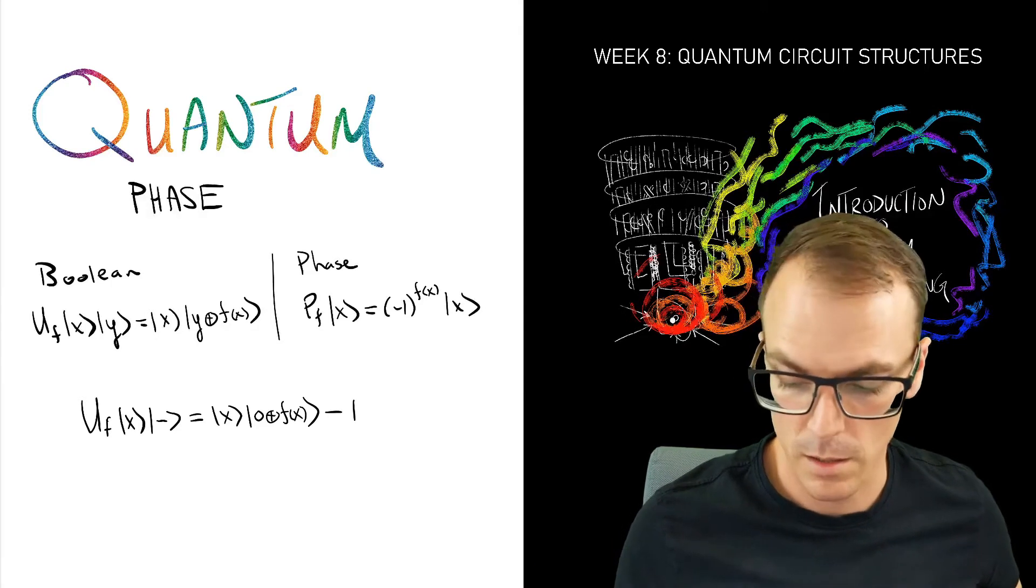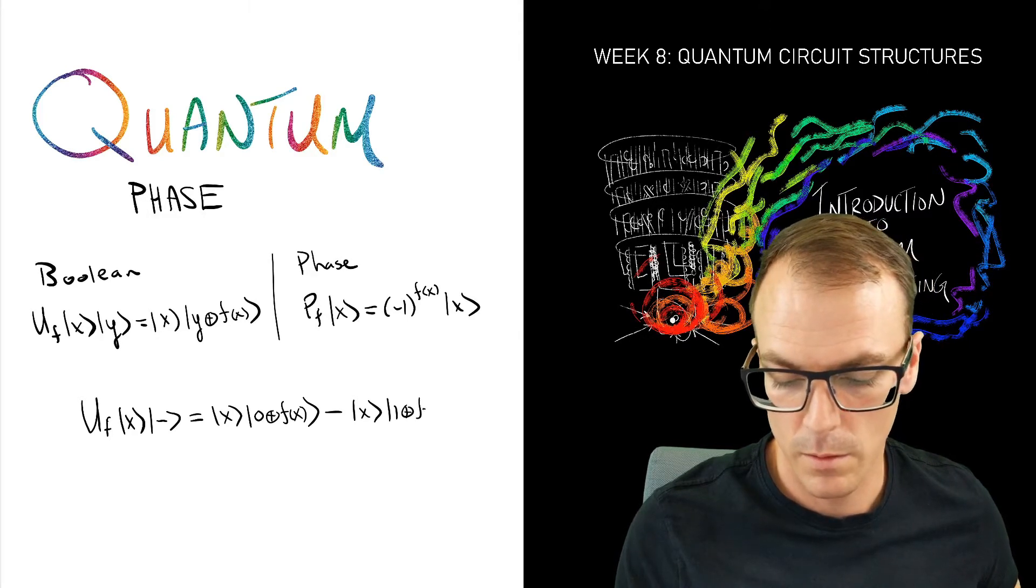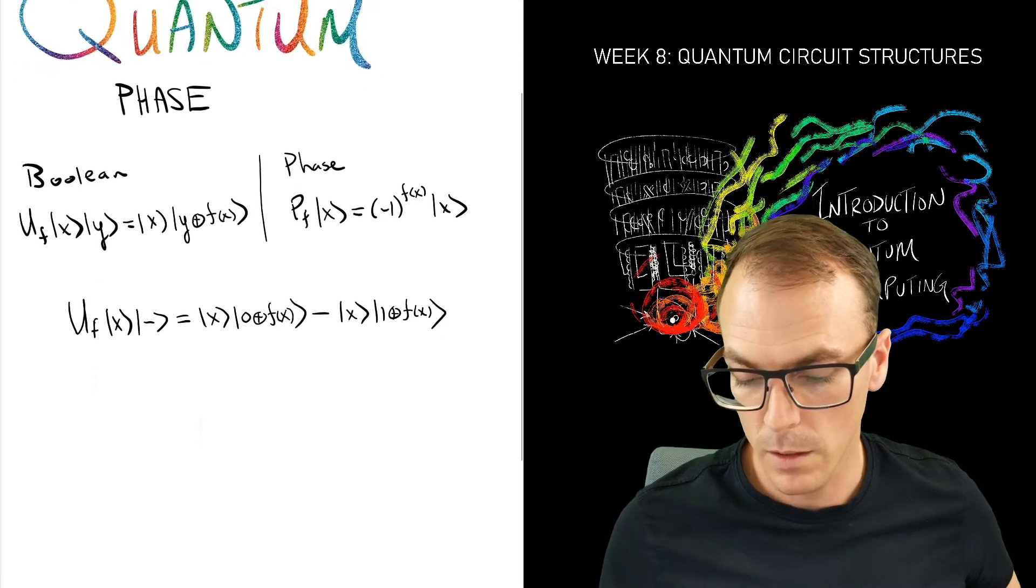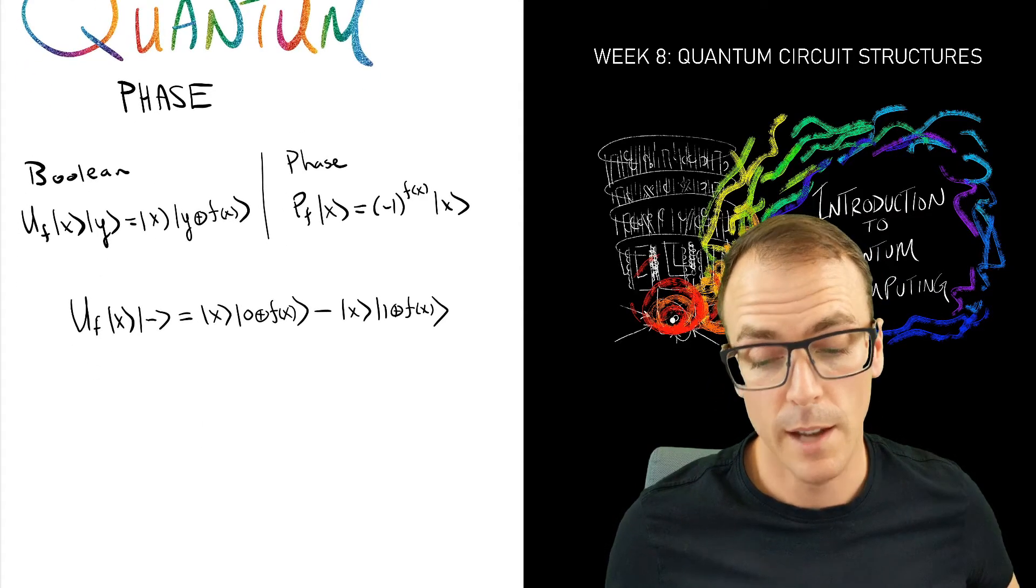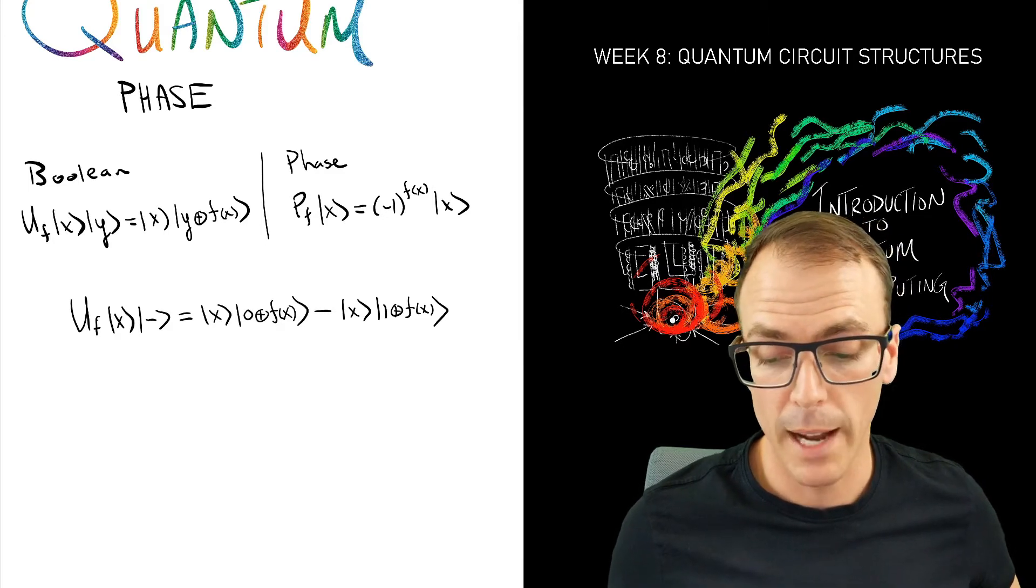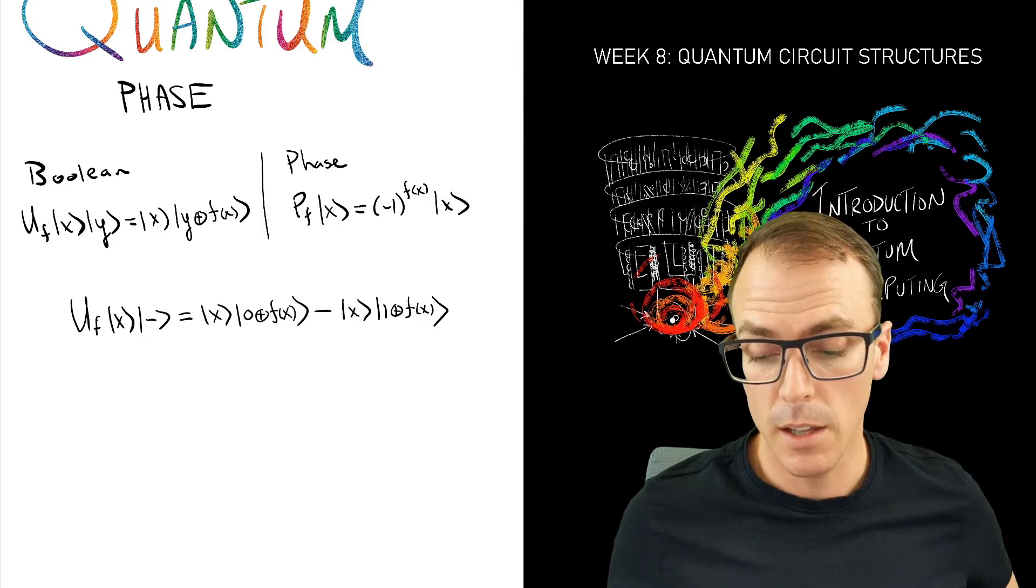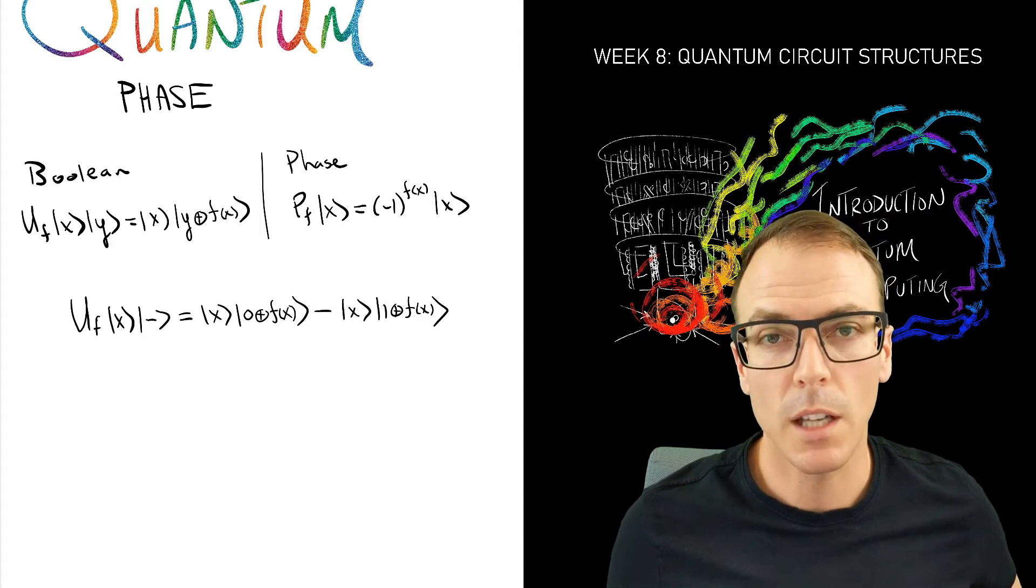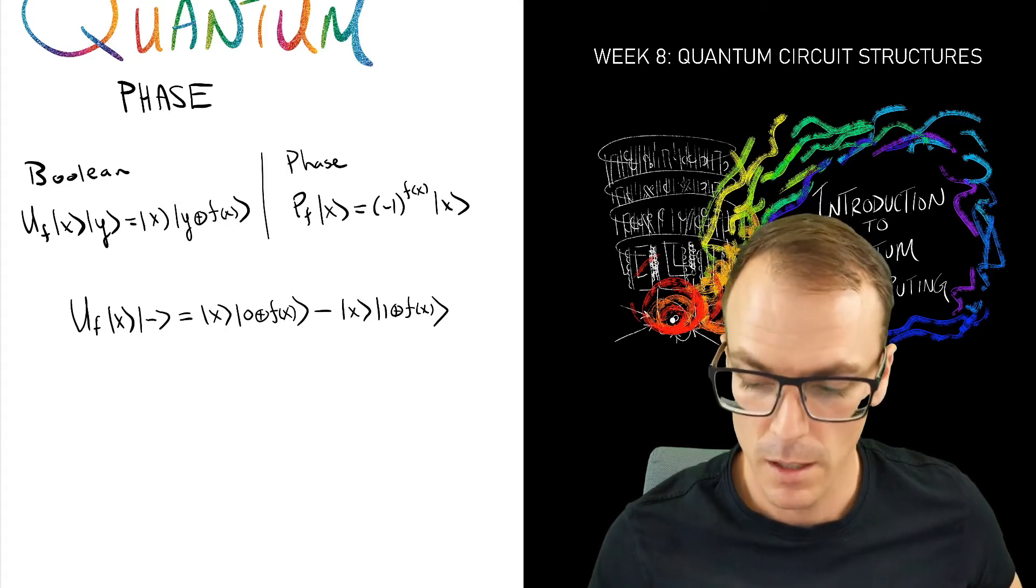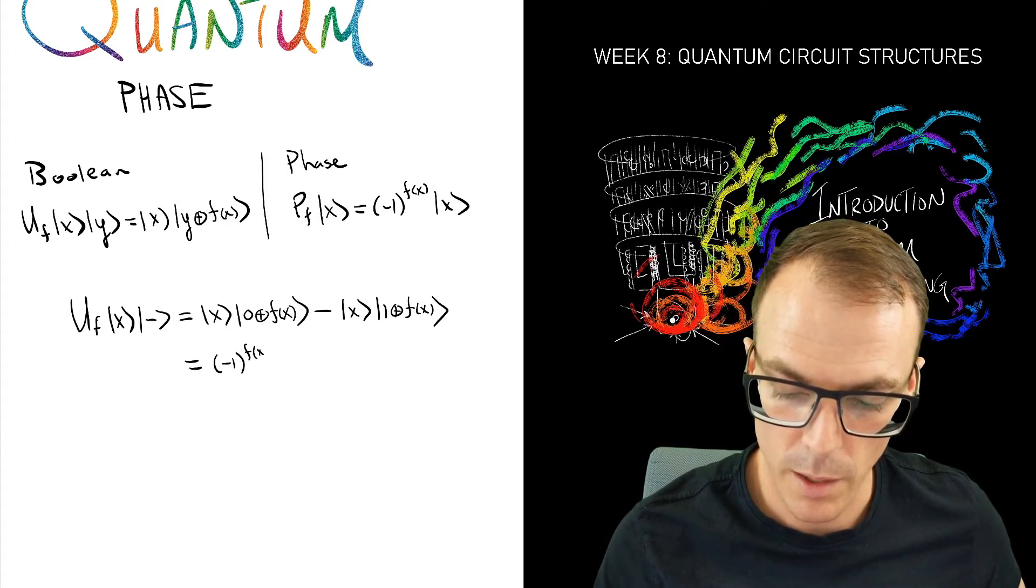So we have |0⟩ minus |1⟩, that's the minus state, remember, and we have |1⊕f(x)⟩. Now there are two possibilities: f(x) is zero, in which case we get back to |x⟩|−⟩, and the other case is one, in which case we get minus |x⟩|−⟩.